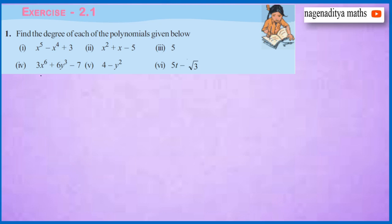The first one is x power 5 minus x power 4 plus 3. It contains three terms. In these three terms, the highest power is 5. So the degree of the polynomial x power 5 minus x power 4 plus 3 is 5. Degree is 5.